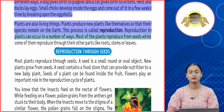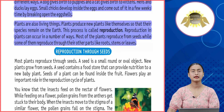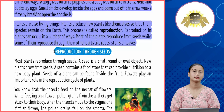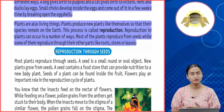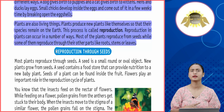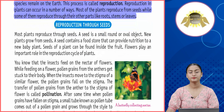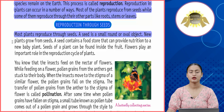Reproduction in plants can happen in a number of ways. Most plants reproduce from seeds, while some reproduce through other parts like roots, stems, or leaves. Plants reproduce so that their species continues on earth, and this happens through seeds or through different plant parts such as roots, stems, branches, and leaves.